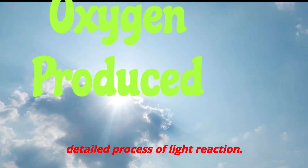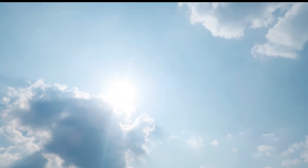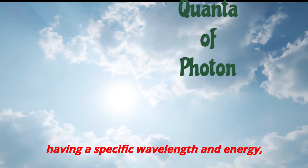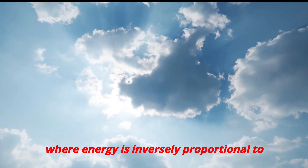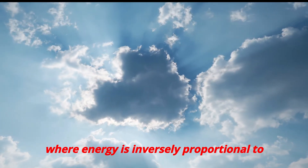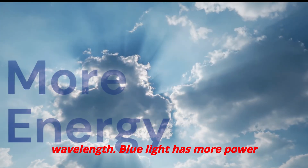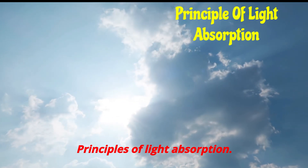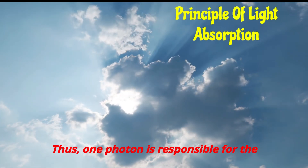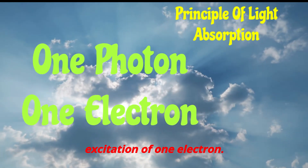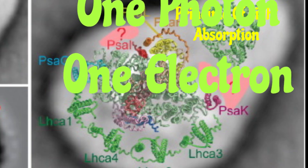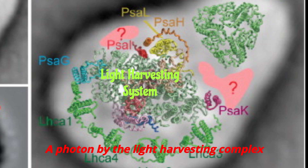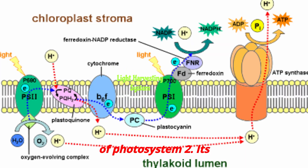We will see the detailed process of the light reaction. Light is expressed as quanta or photons, having a specific wavelength and energy, where energy is inversely proportional to wavelength. Blue light has more energy than red light. One photon is responsible for the excitation of one electron. It begins with the absorption of a photon by the light-harvesting complex of photosystem 2.